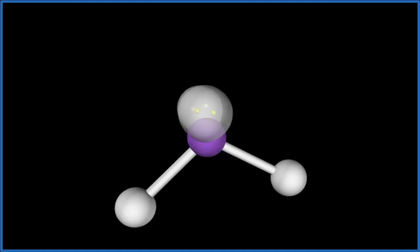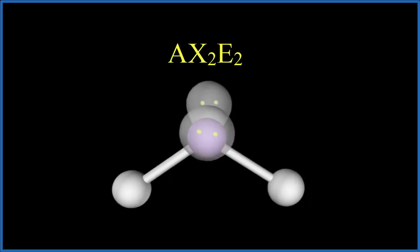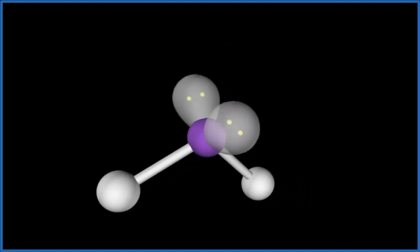If you're using the AXE notation, that would be AX2E2. That would give us the bent molecular geometry. For the electron geometry, this is considered tetrahedral.